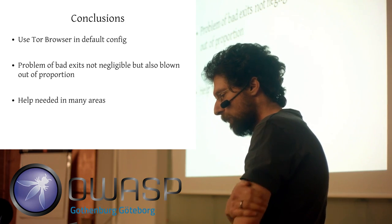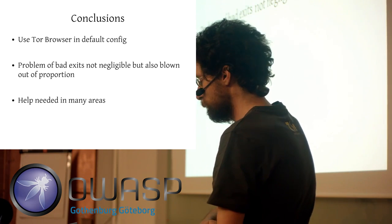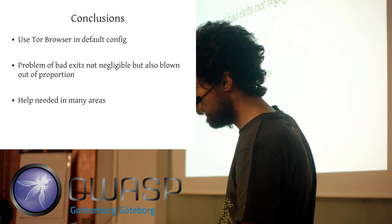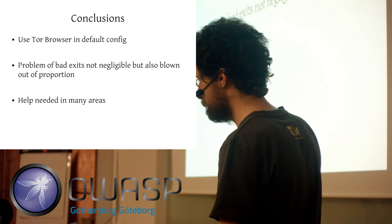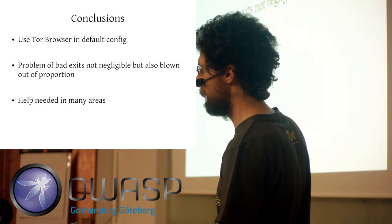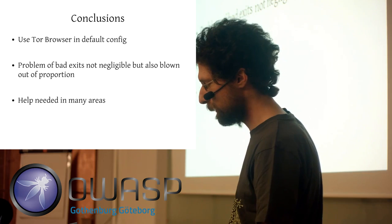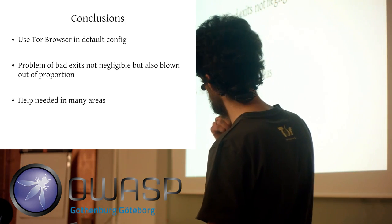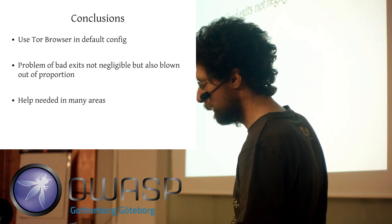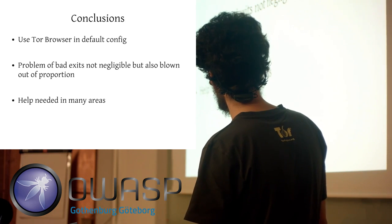So we have some conclusions. You should use Tor Browser by default — it's the most sane thing you can do if you want to surf over the Tor network. The problem of bad exits is not negligible, but as Philip said, it's blown out of proportion if you consider how many exit relays we have, how much effort we take detecting and removing them quickly, and how much protection Tor Browser gives you. And as you've seen, there's help needed in many areas because it's a huge topic and it's important for users.